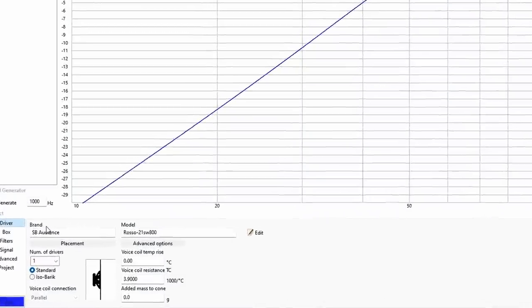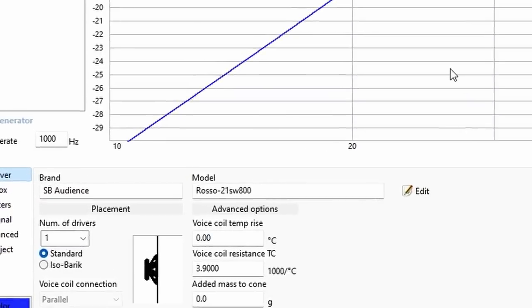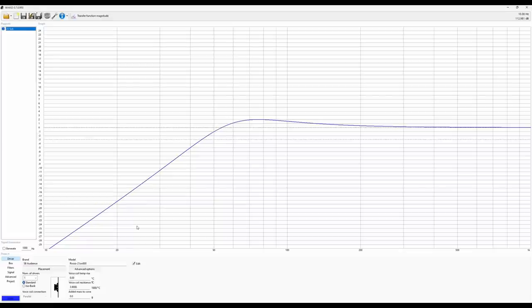I wanted to take a 21 inch subwoofer, put it in a sealed box, and see what the response might look like in a room. Let's crawl over to WinISD. What I have here is an SP Audience Rosso SW-800, a 21 inch subwoofer.